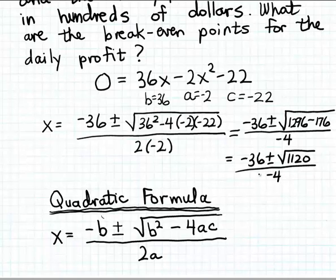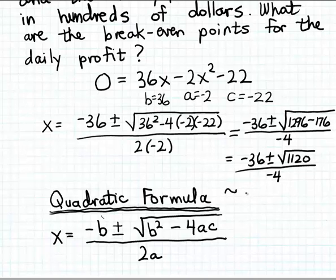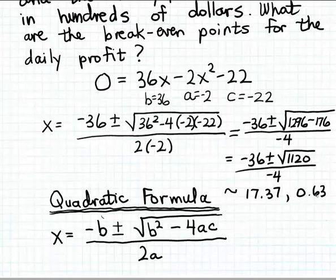You can continue simplifying by hand — 1120 is not a perfect square, so you can't simplify completely. However, in this case I'm going to go ahead and estimate the values for the two break-even points using a calculator. To a couple of decimal places, the two solutions turn out to be approximately 17.37 and 0.63.